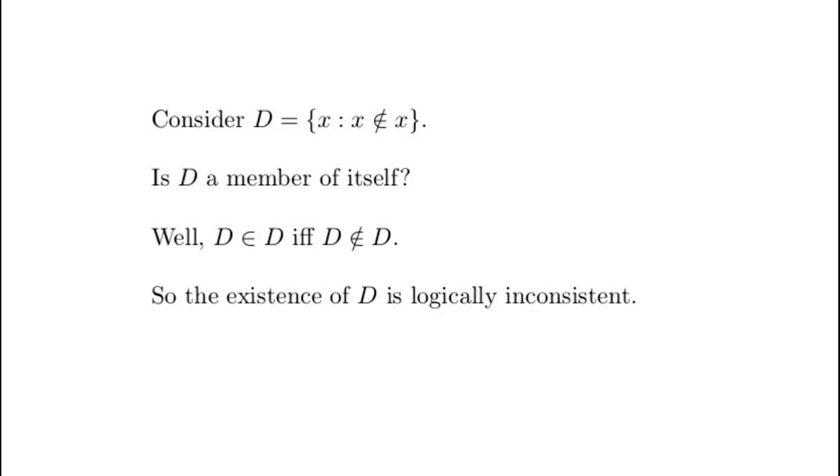So D is a member of itself if and only if it's not. We have a logical contradiction. The existence of D is logically inconsistent. Okay, what do we do now? Well, the answer is we be cautious. We have to be cautious about when we allow ourselves to say that a set exists, and that is a very big deal.